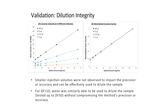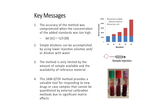So I'd like to overview the key messages from today's workshop. First, the accuracy of standard addition is compromised when the concentration of the standards used are too high. My recommendation is to aim to set your first standard to around 30% the concentration of your unspiked sample. Know that dilutions are very easily accomplished by either simply lowering the injection volume or diluting the sample with water.